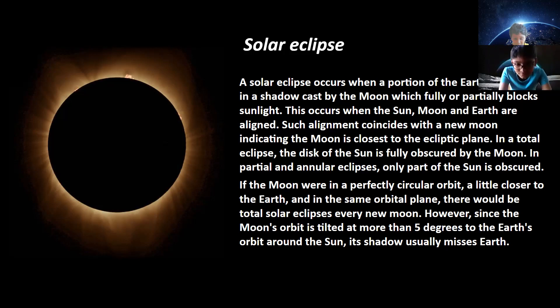If the moon were in a perfectly circular orbit, a little closer to the Earth and in the same orbital plane, there would be total solar eclipses every new moon. However, since the moon's orbit is tilted at more than 5 degrees to Earth's orbit around the sun, its shadow usually misses Earth.